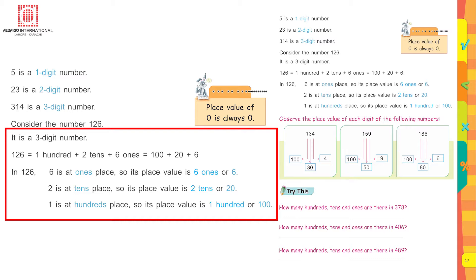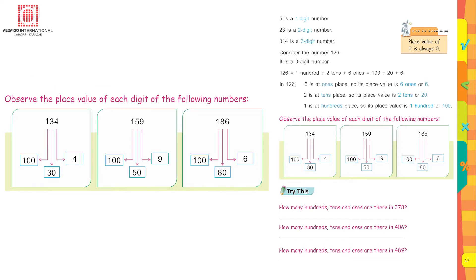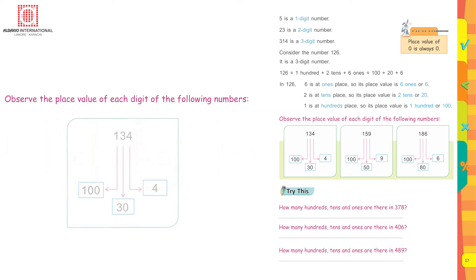This equals 100 plus 20 plus 6. In 126: 6 is at the ones place so its place value is six ones, or 6. 2 is at the tens place so its place value is two tens, or 20. 1 is at the hundreds place so its place value is one hundred, or 100.